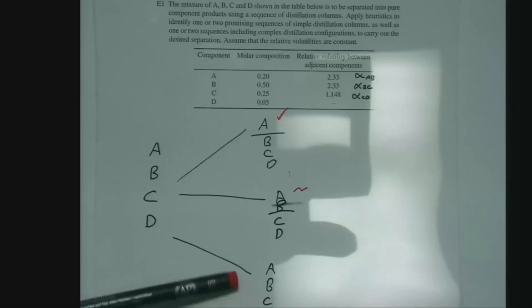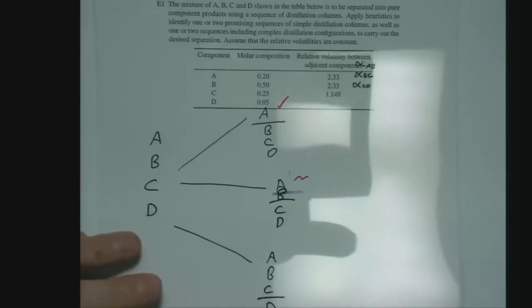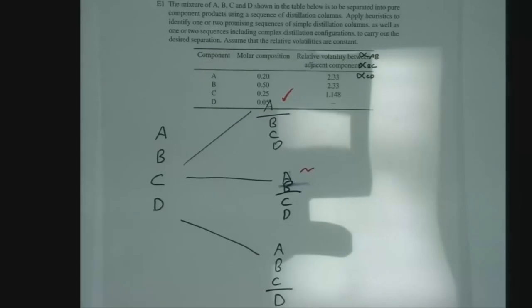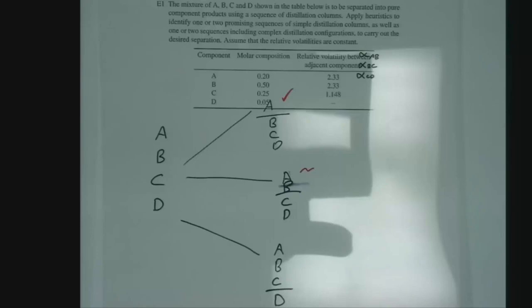What about the bottom one, separating C and D? Are there heuristic rules that say it's good or bad? The rule is: do the most difficult separation last. Between C and D we have the smallest relative volatility, making it the most difficult separation, so we really don't want to be doing that first.